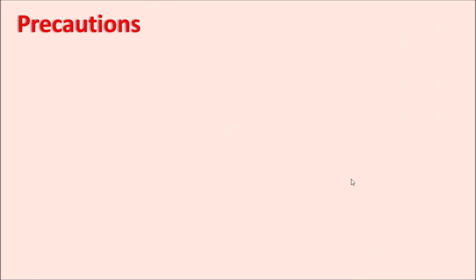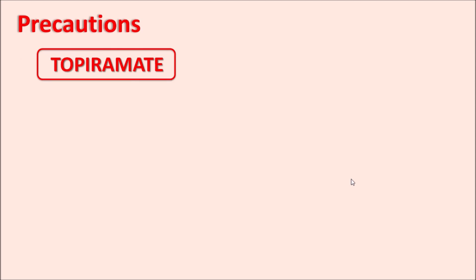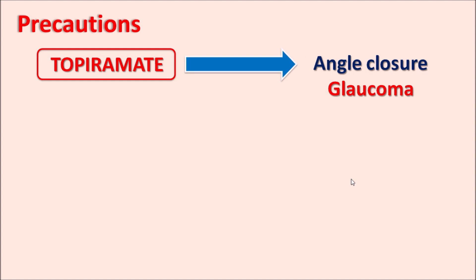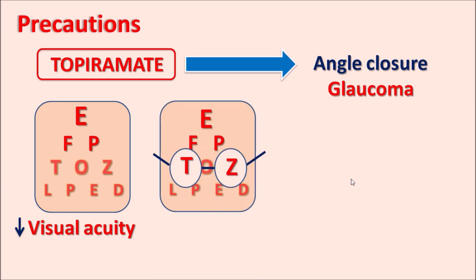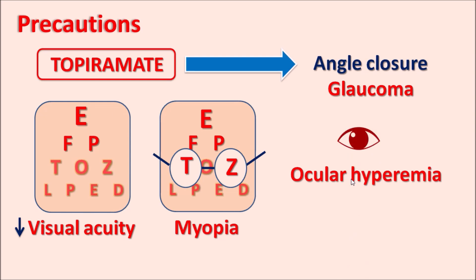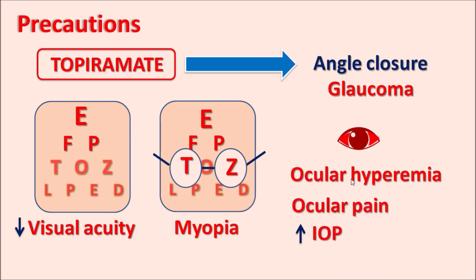Now let us see the precautions of topiramate. One important precaution is that this drug can increase the risk of angle-closure glaucoma. If a patient already has glaucoma, this can be further worsened by topiramate, and the drug can reduce visual acuity. It can also precipitate acute myopia, short-sightedness, ocular hyperemia — redness of the eye — increased ocular pain, increased intraocular pressure, and blurred vision. Care should be taken to monitor any change in visual activity, and patients at risk of developing glaucoma should avoid topiramate.